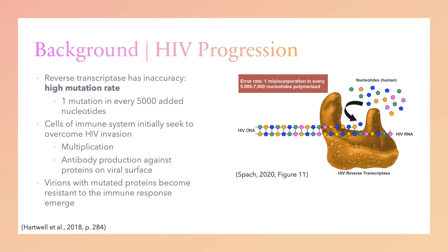HIV uses this high capacity for mutation to gain a tactical advantage over the immune response in humans. Cells of the immune system seek to overcome an HIV invasion by multiplying in response to the proliferating viral particles. In every patient, each day of infection results in 100 million to a billion HIV particles being released from infected immune system cells, which are CD4 white blood cells, a type of helper T cell. Nonetheless, as long as the immune system is strong enough to withstand the assault, it responds by producing as many as 2 billion new cells daily. Many of these new immune system cells produce antibodies targeted against proteins on the surface of the virus.